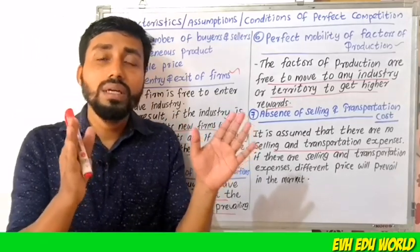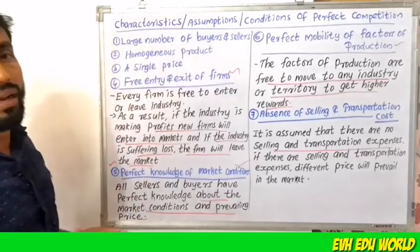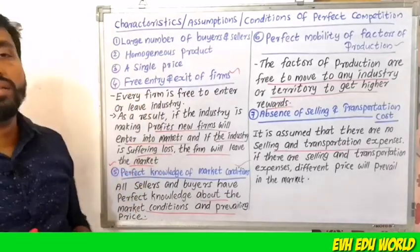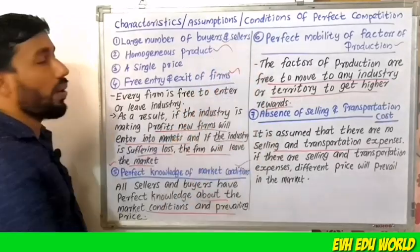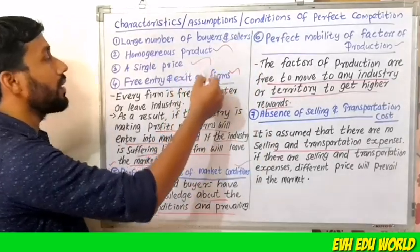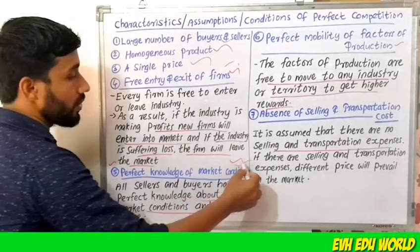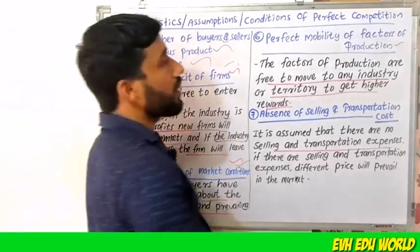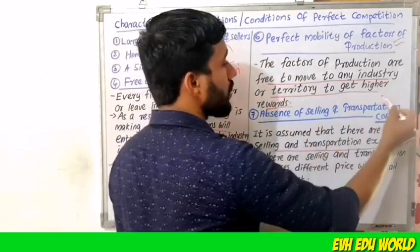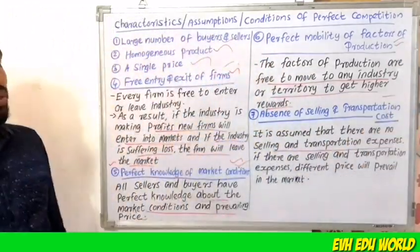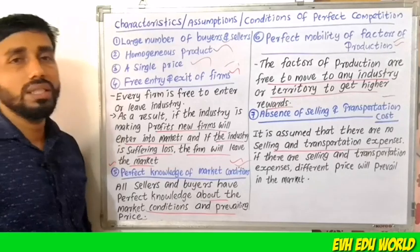So, the features of perfect competition are: large number of buyers and sellers, homogeneous product, a single price, free entry and exit of firms, perfect knowledge of market conditions, perfect mobility of factors of production, and absence of selling and transportation costs.